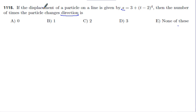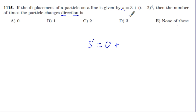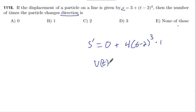So I'll go ahead and take the first derivative. The derivative of s: the 3 just drops away, and I have to do chain rule here — though the chain rule is going to be very simple. The derivative of the outside times the derivative of the inside, which is just 1. So the velocity function is 4(t - 2)³.